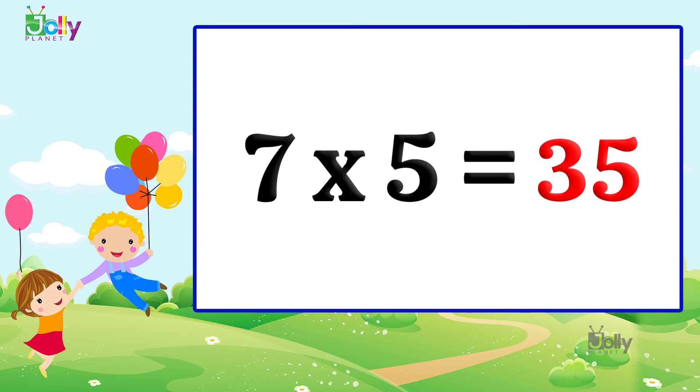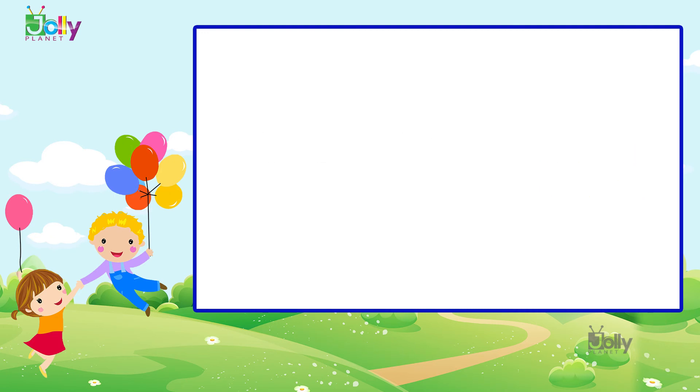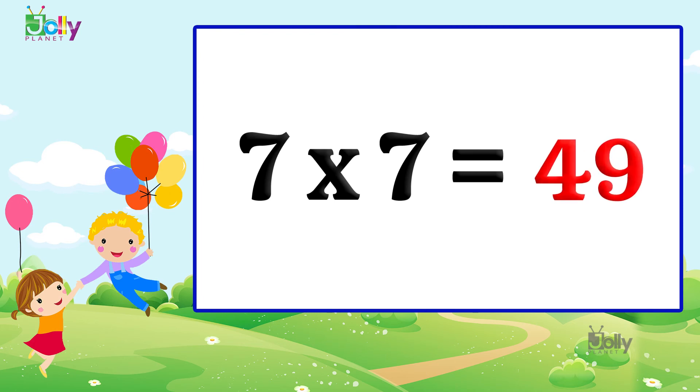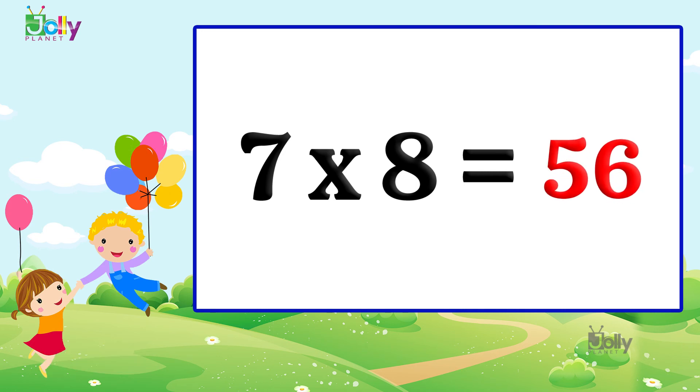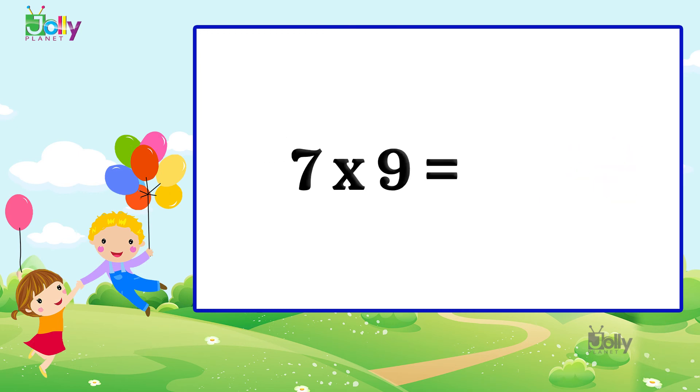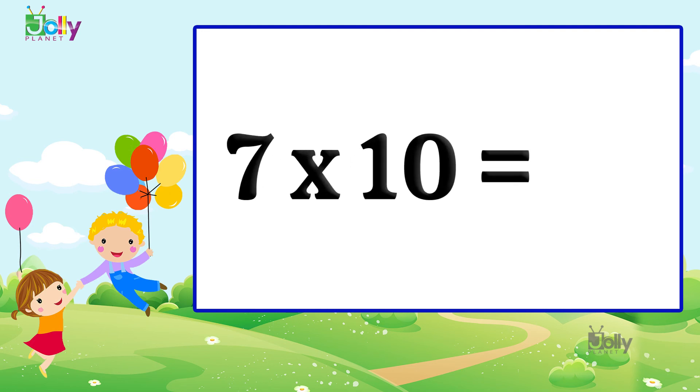Seven fives are 35. Seven six are 42. Seven sevens are 49. Seven sevens are 49. Seven eights are 56. Seven eights are 56. Seven nines are 63. Seven nines are 63. Seven tens are 70. Seven tens are 70.